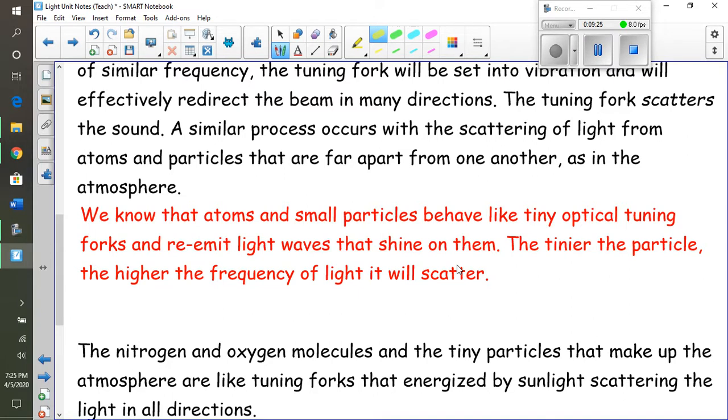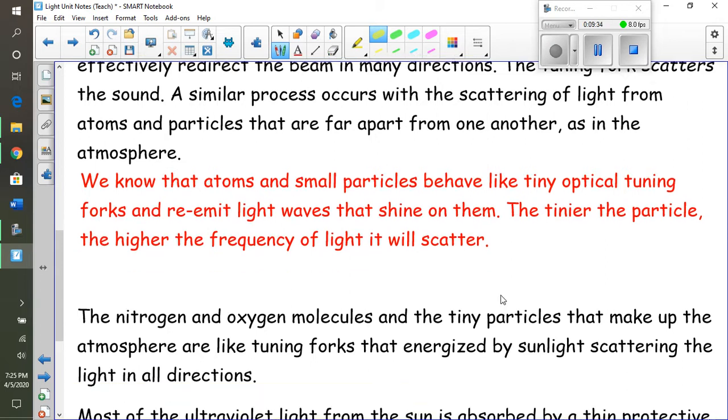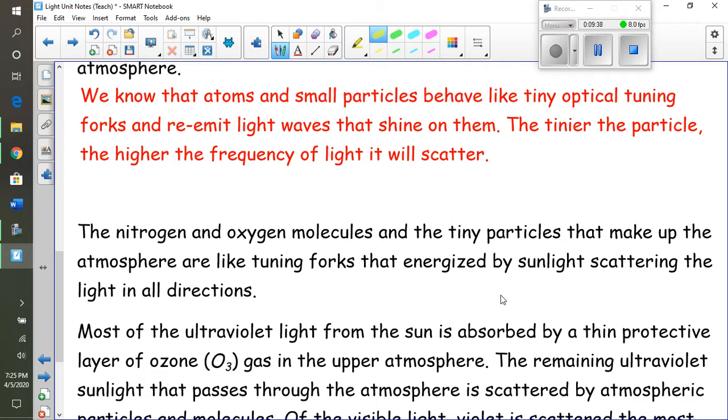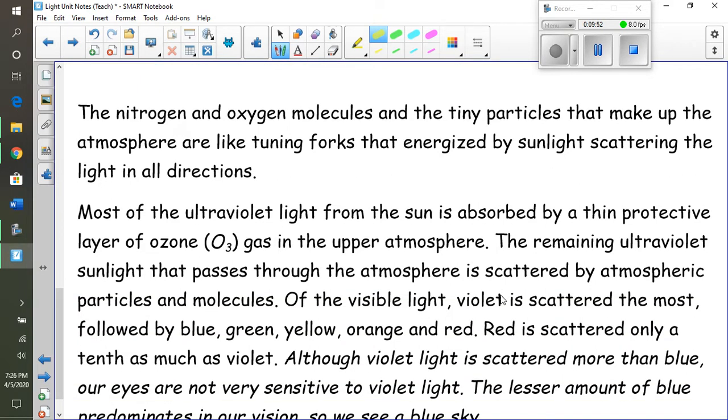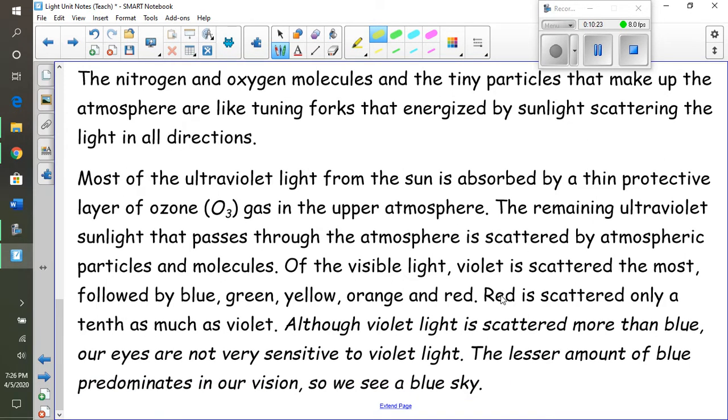A similar process occurs with the scattering of light from atoms and particles that are far apart in our atmosphere. These atoms and small particles act like tiny optical tuning forks and re-emit light waves that shine on them. The tinier the particle, the higher the frequency of light that it will scatter. Nitrogen and oxygen molecules and the tiny particles that make up our atmosphere are like little tiny tuning forks that are energized by sunlight, scattering the light in all directions. Most of the ultraviolet light from the sun is absorbed by a thin layer called the ozone in the upper atmosphere. The remaining ultraviolet light that passes through the atmosphere is scattered by atmospheric particles and molecules. Of the visible light, violet is scattered the most, followed by blue, green, yellow, orange, and red. Red is scattered only a tenth as much as violet. Although violet light is scattered more than blue, our eyes are not very sensitive to violet light. So the lesser amount of blue predominates our vision and we see a blue sky.